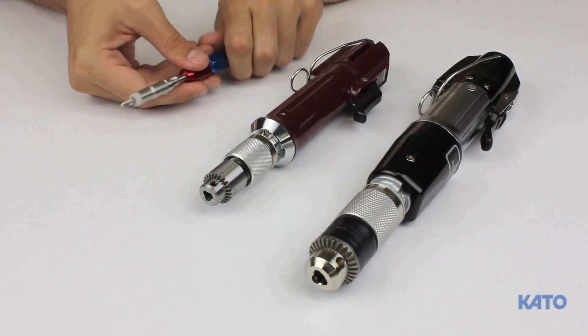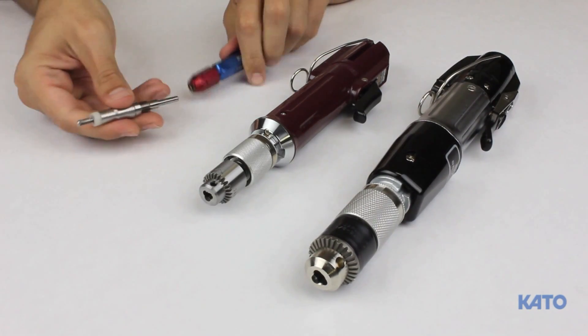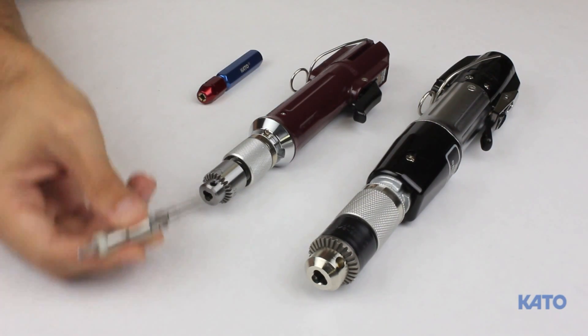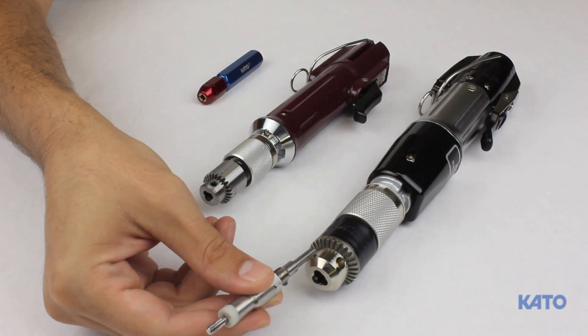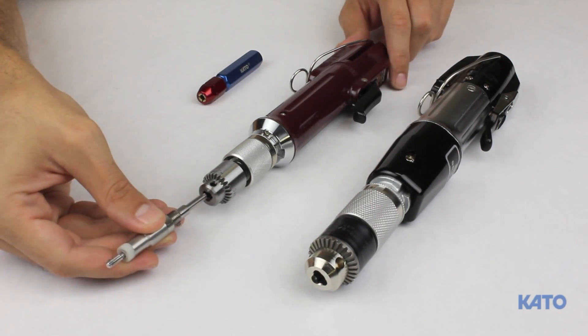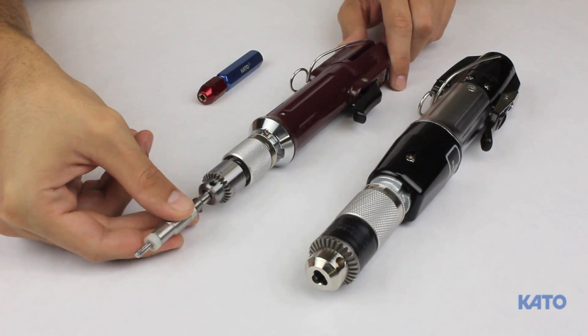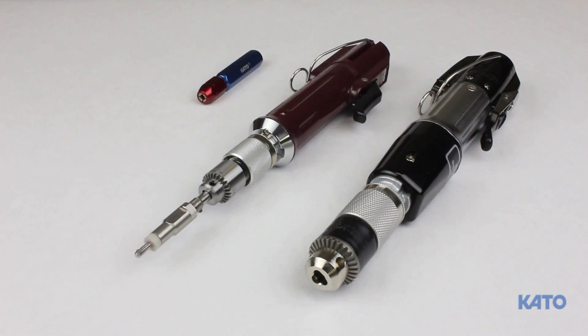The mandrel assembly can be removed from the handle and used in the Kato SB400C or SB650C electric driver. For instructions on how to use the electric driver, please watch the Kato Round Electric Tool video.